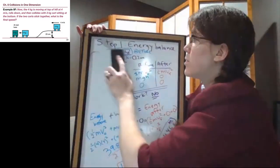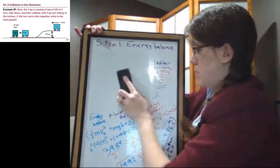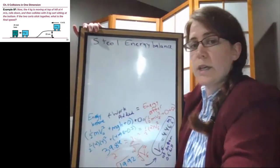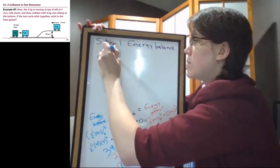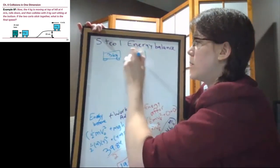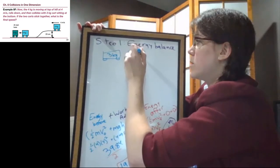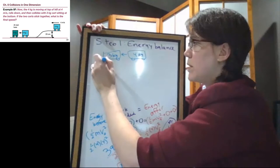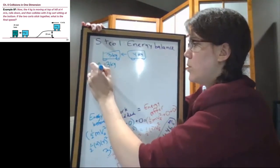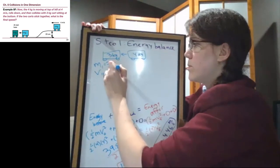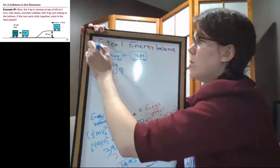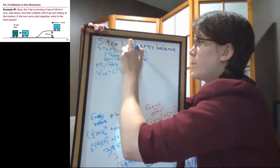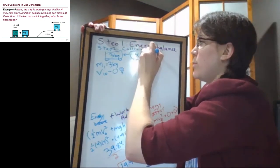So our step 2 is the 3 kilogram cart is not moving, the 4 kilogram cart is about to hit it, and it's moving. So M1 is 3 kilograms, V1 initial is 0. This is for step 2. Step 2 is the collision, which means we need momentum.